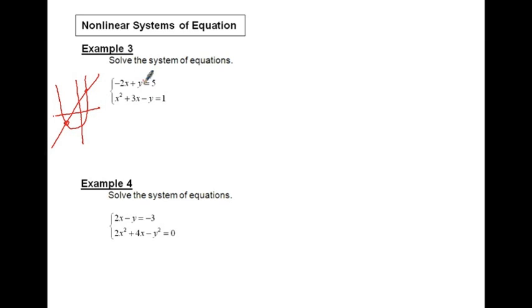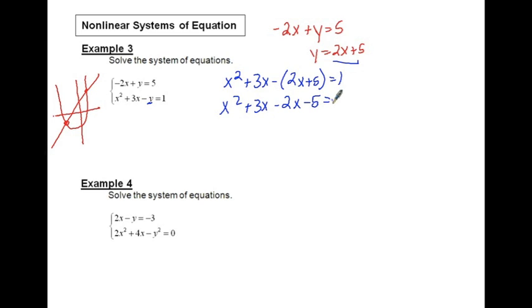But let's just look at this and go through just like what we've been doing. Negative 2x plus y equals 5, and x squared plus 3x minus y equals 1. Take one of those and solve it for one of the variables. I'm going to pick the first one because it looks a whole lot easier to solve for the y. So all I'm going to do is just basically add the 2x over to the other side.